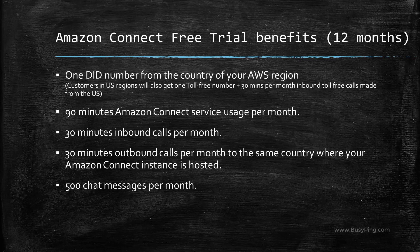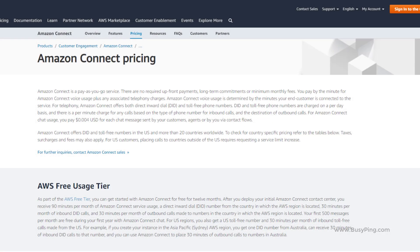Then you will get 90 minutes of Amazon Connect service usage per month, 30 minutes of inbound calls per month, 30 minutes of outbound calls per month to the same country where your Amazon Connect instance is hosted, and finally 500 chat messages per month. This pricing model and free tier terms could change anytime, so I would strongly recommend you always check the rates on this page for the most updated information.